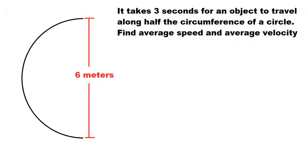In this example, it takes three seconds for an object to travel along half the circumference of a circle, and we want to find the average speed and average velocity.